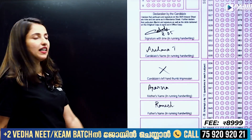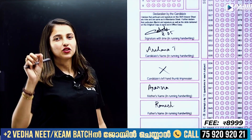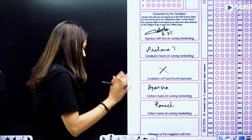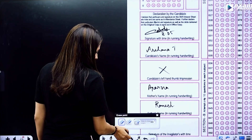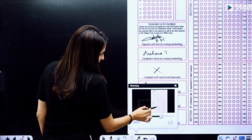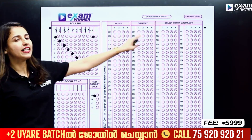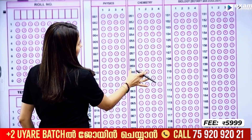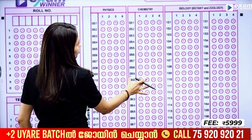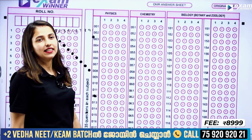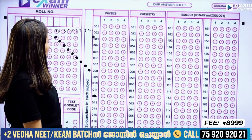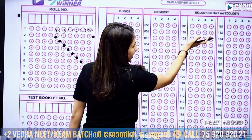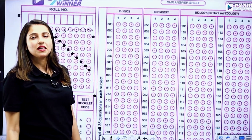This is the signature of the invigilator with time. An invigilator is in our classroom and he signs the call. Now for the OMR answer sheet, we will answer 200 questions. Physics, Chemistry, Biology, Botany, and Zoology have separate columns on the OMR sheet.